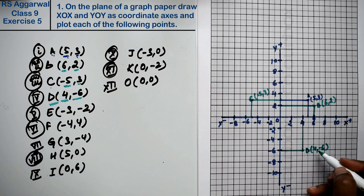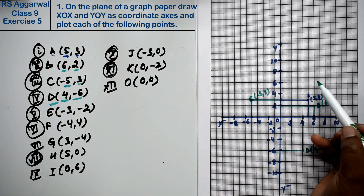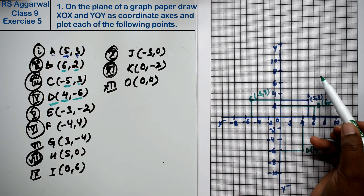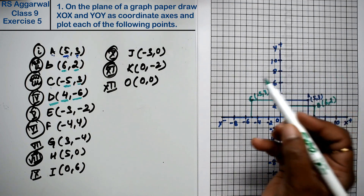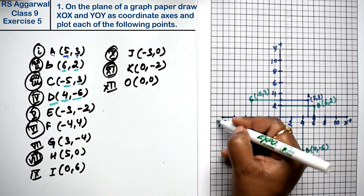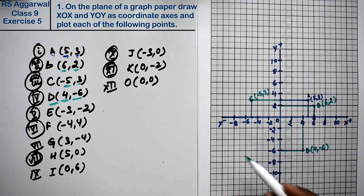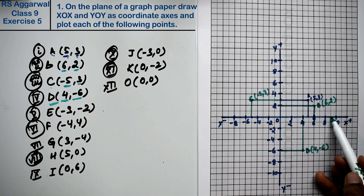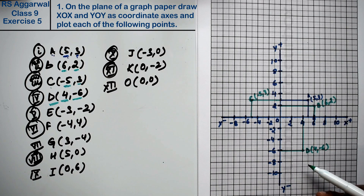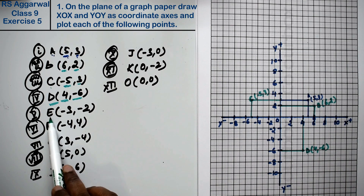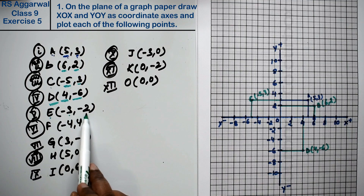Friends, in the first quadrant both x and y are positive. In the second quadrant, x is negative and y is positive. In the third quadrant, both x and y are negative. In the fourth quadrant, x is positive and y is negative. For point E, both values are negative — minus 3 and minus 2 — so it lies in the third quadrant.